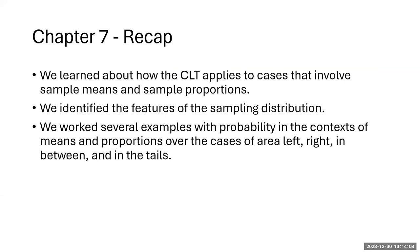In this section we've accomplished quite a bit, working through eight examples. We've looked at how the central limit theorem applies to cases involving means and proportions with samples, identified the features of the sampling distribution, and worked eight probability examples in the contexts of means and proportions, examining all cases: area to the left, area to the right, in between, and in the tails.